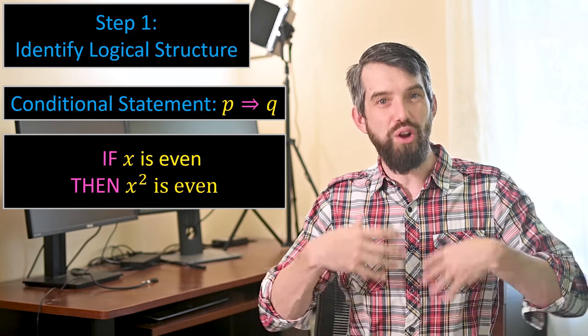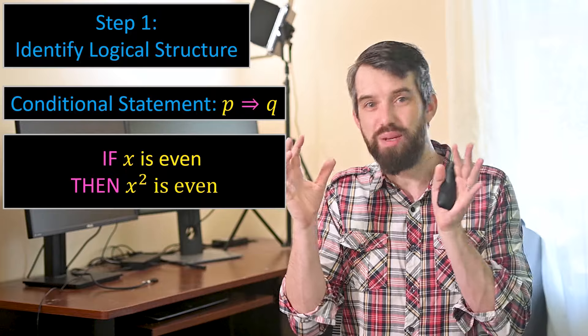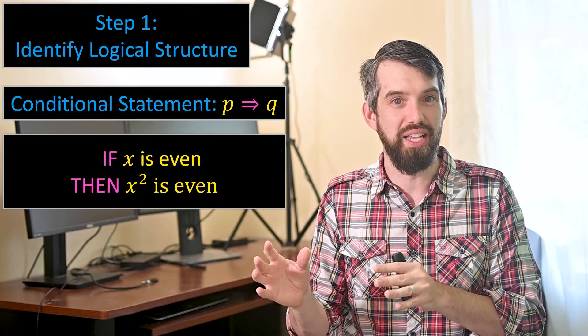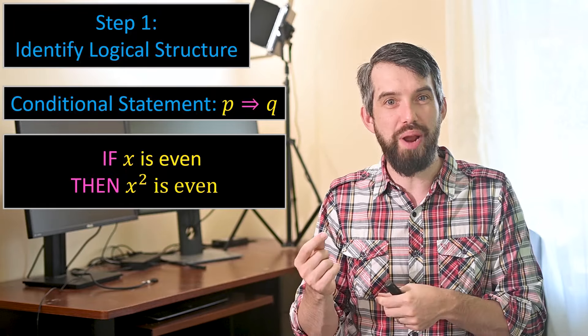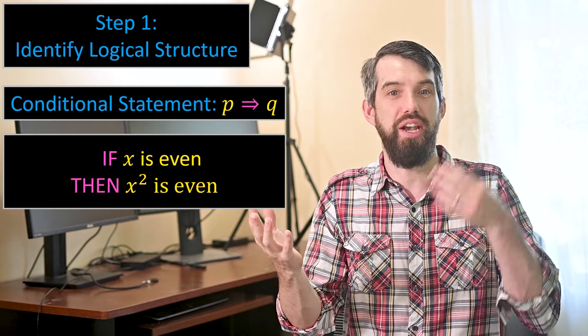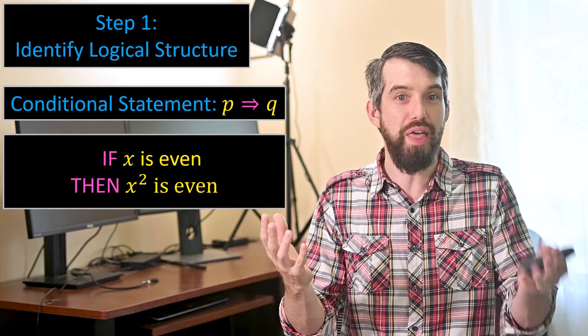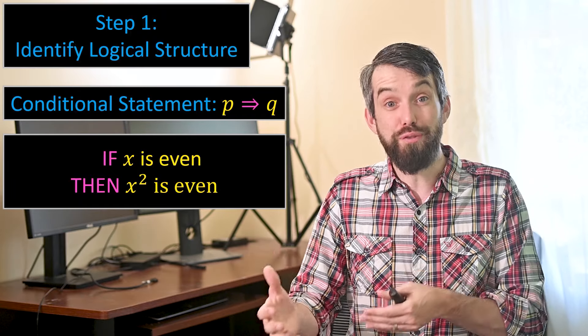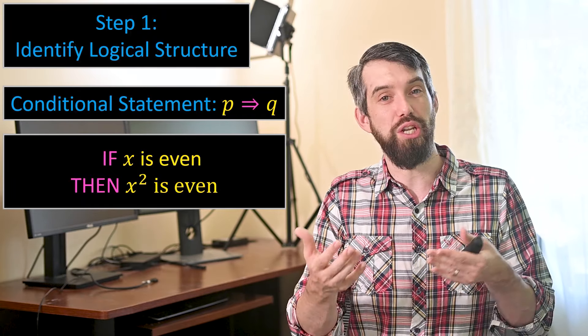Often proofs aren't written quite so clearly as if some assumptions, then some conclusions. We may have turned the words around. But if you can take whatever is given and interpret it in this way, where you've got an assumption and a conclusion, then that's going to be very useful for coming up with a strategy to actually prove this claim.